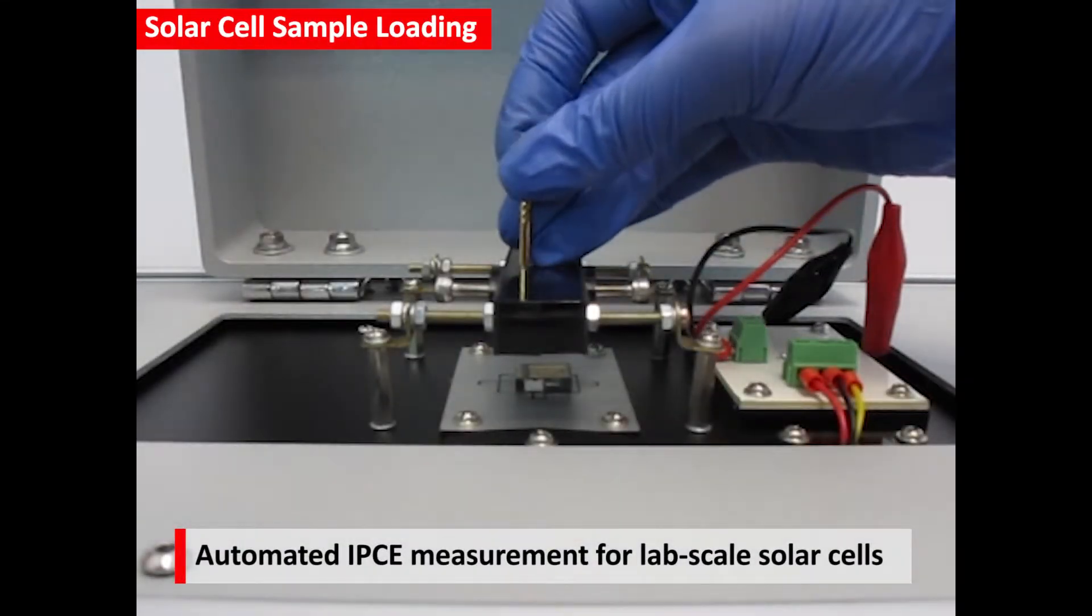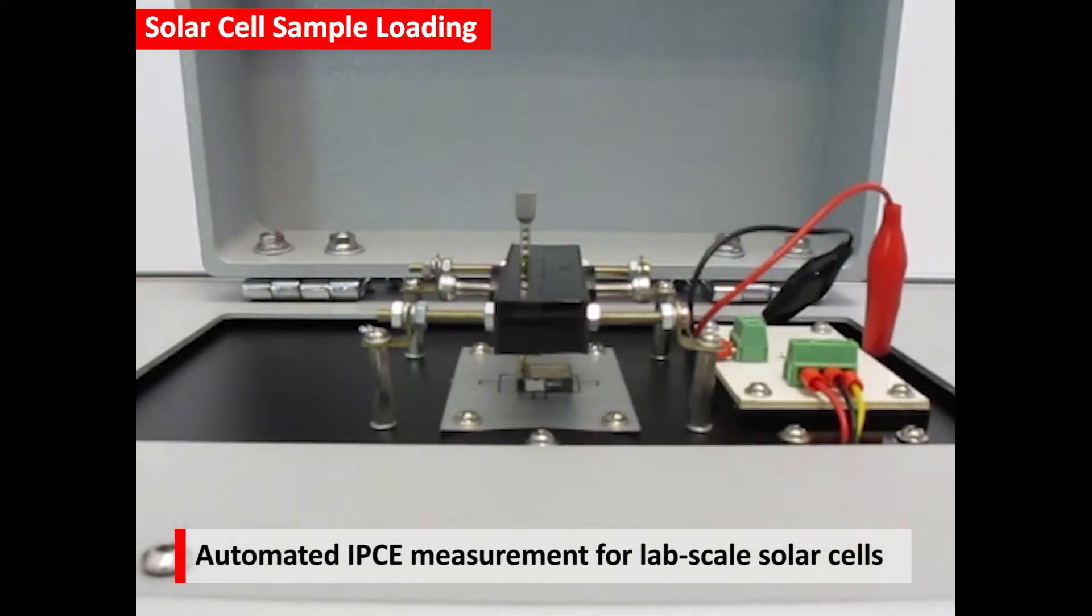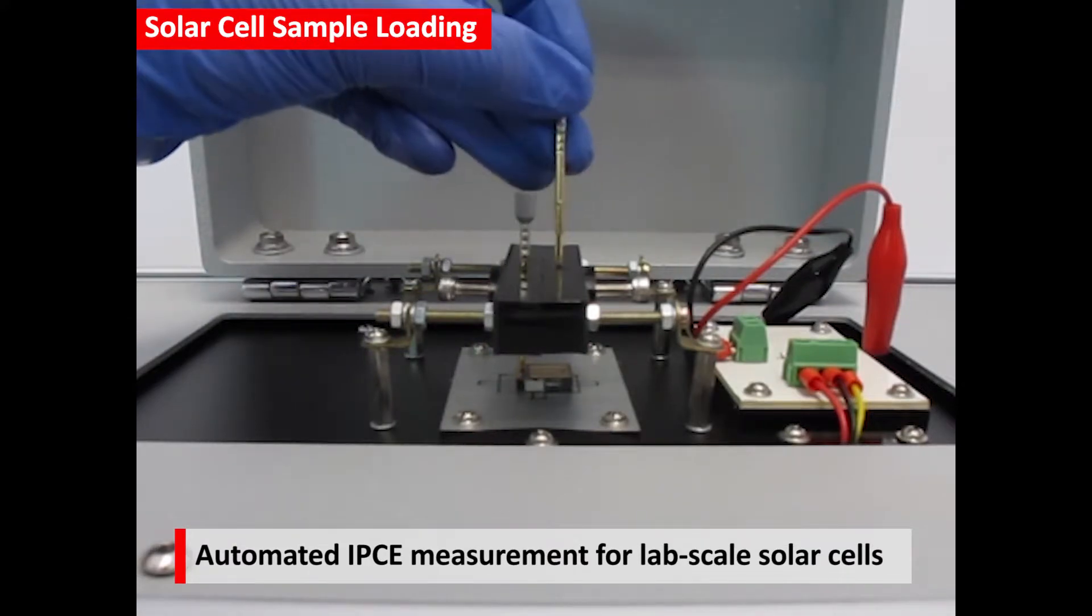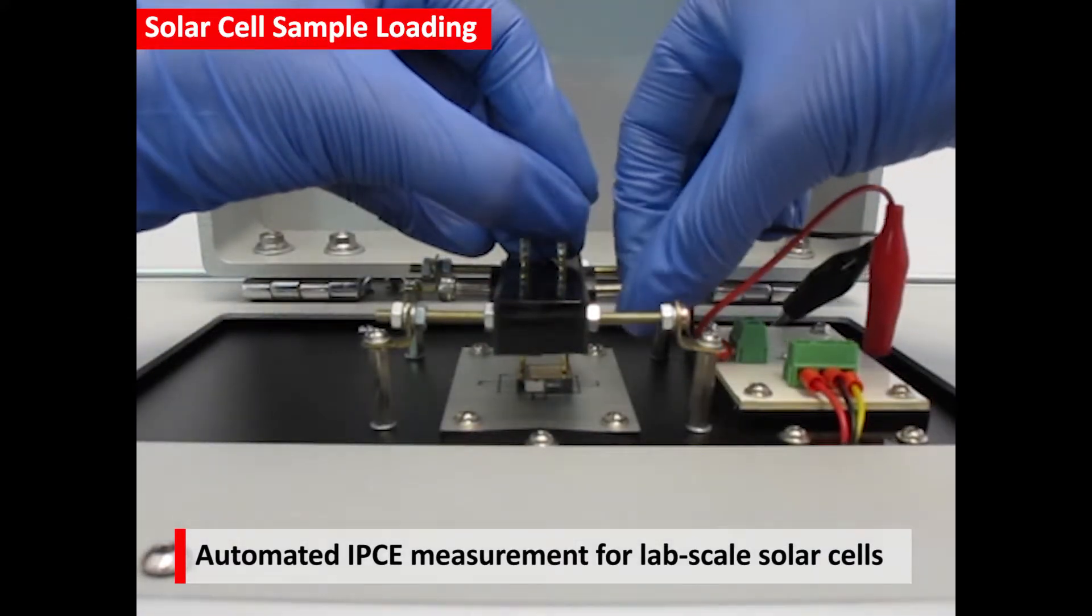Now, the solar cell sample is placed at the sample position, and two spring tips are inserted to make contacts. You can use any other method of contacting to sample cells, depending on the geometry of your cell.